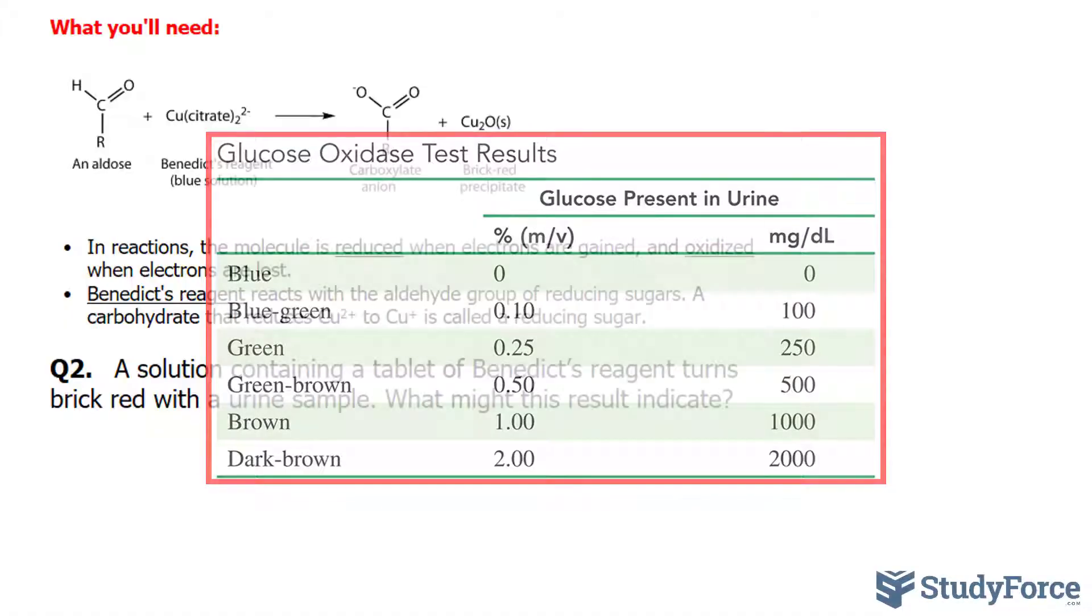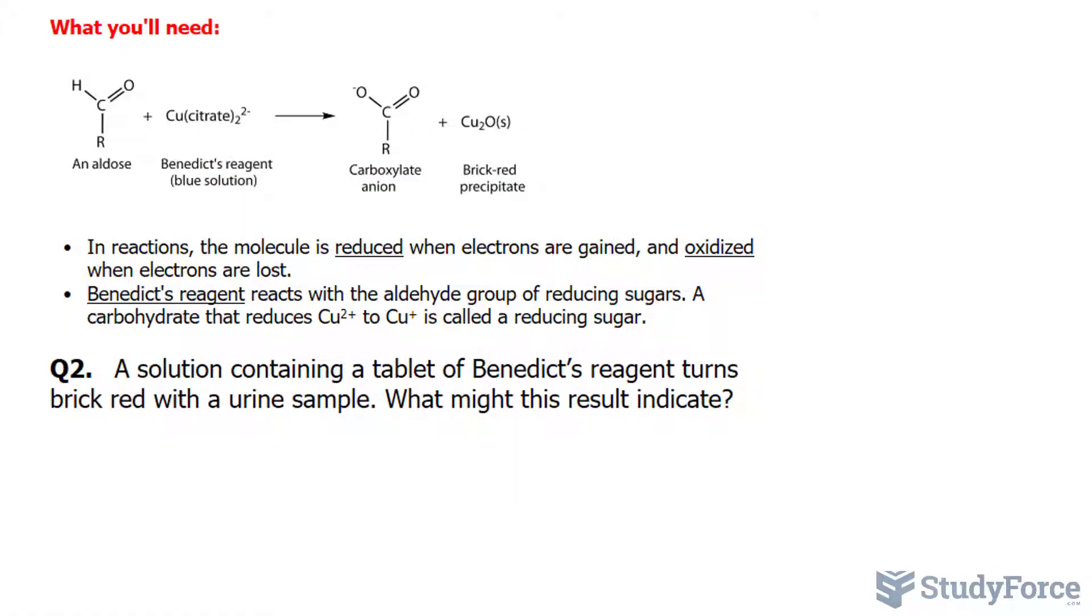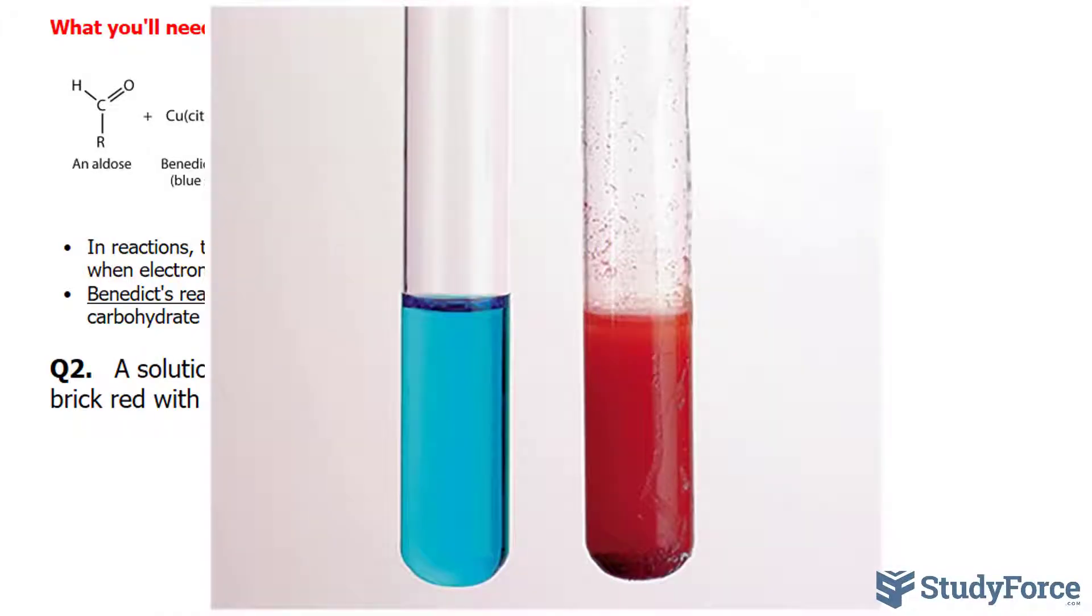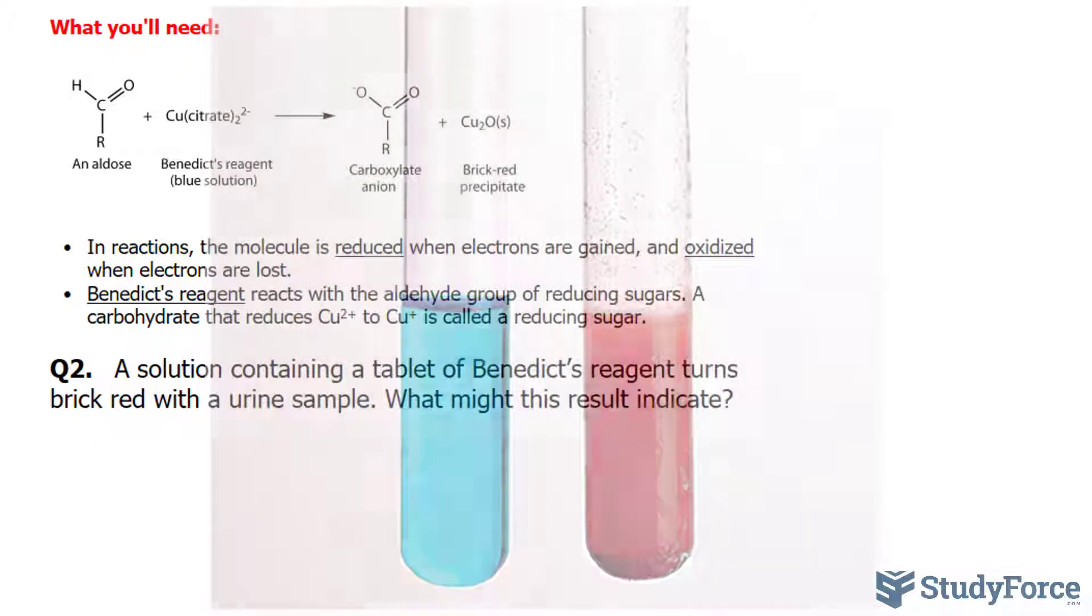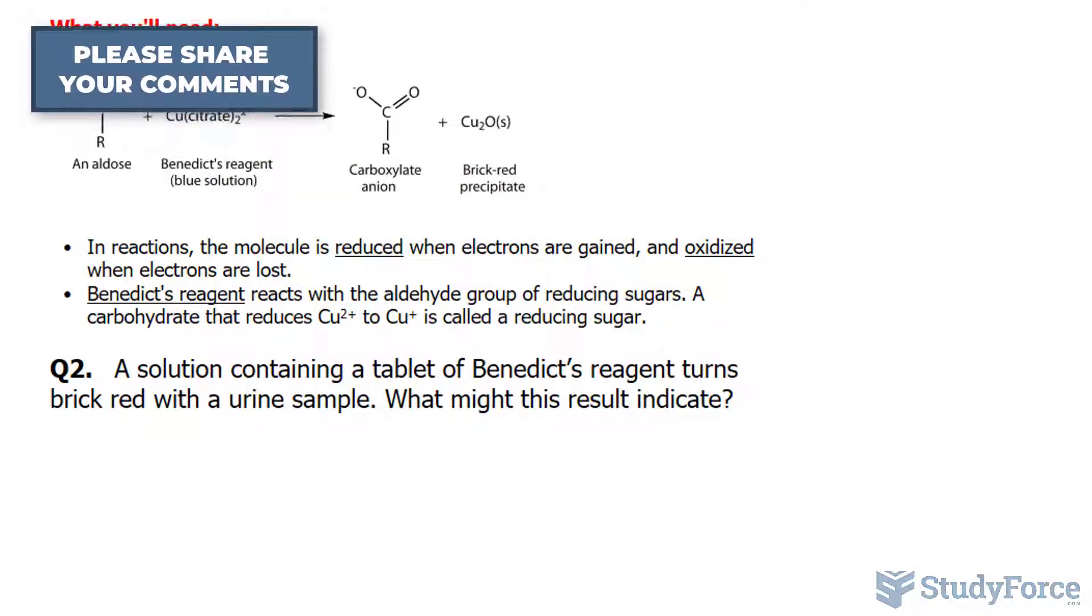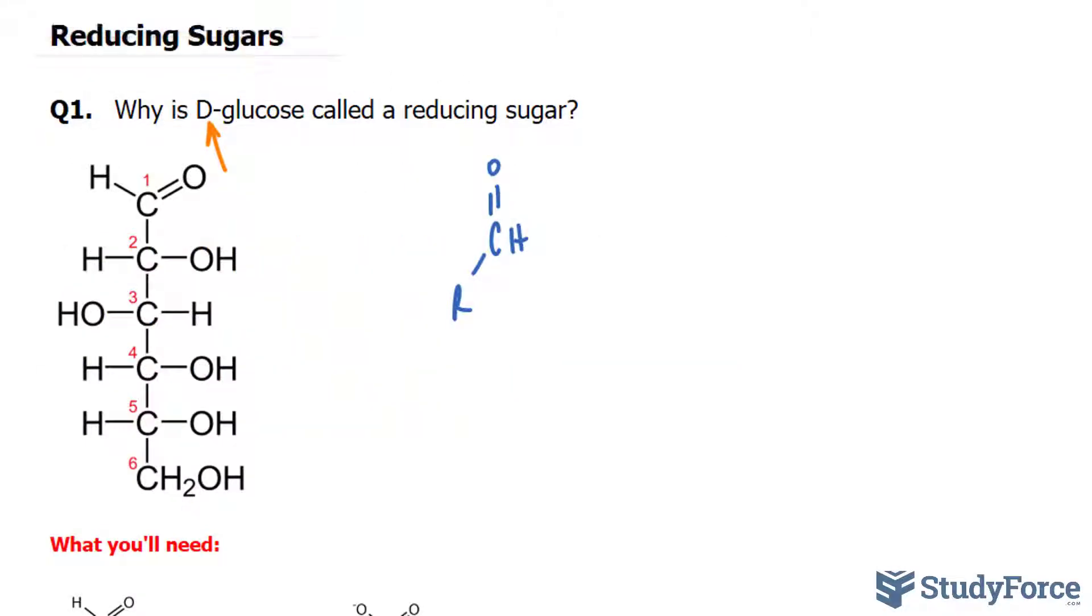If there's sugar found in the urine, that's an indication of complications such as diabetes or kidney issues. A brick-red color of Benedict's reagent tells us there's a high level of reducing sugars, probably glucose in the urine, and that's not a good thing. There you have it, a quick discussion on reducing sugars.